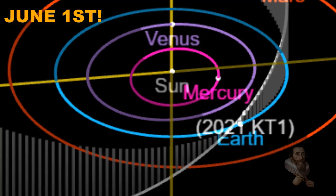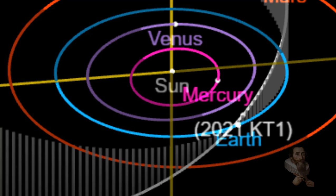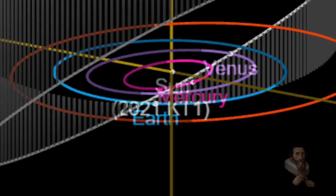An asteroid that could be taller than two Blackpool towers combined is expected to shoot past the Earth early next month, and according to the Jet Propulsion Lab, it's potentially hazardous. Wait till you hear this.